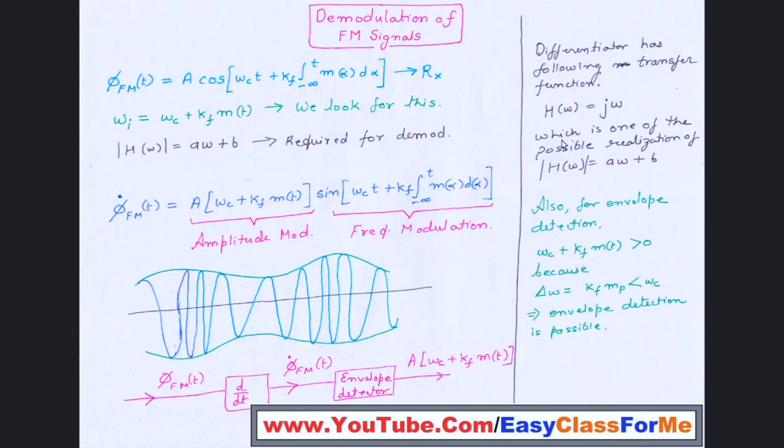The magnitude of this will be simply ω, and you can just use this particular filter. And if you look at it, this is an ideal differentiator. So this differentiator has the following transfer function.